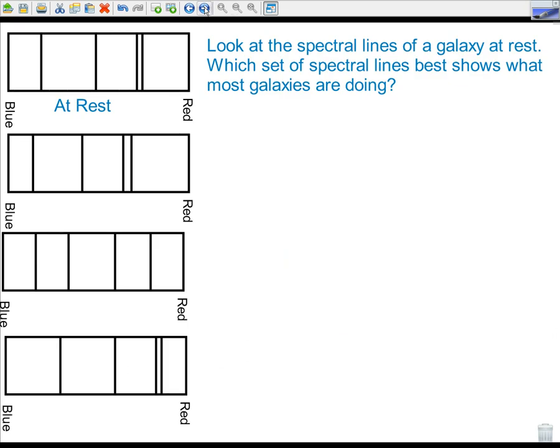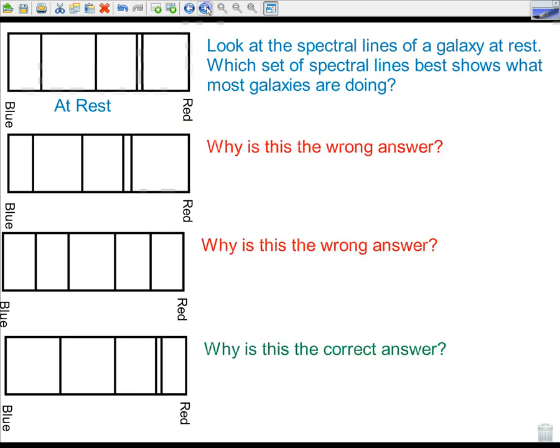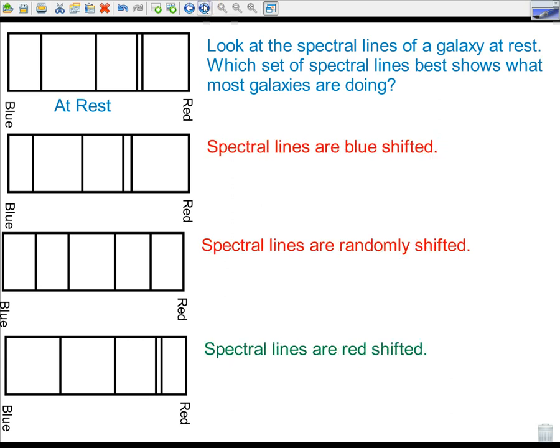So a little question that comes up: Look at the spectral lines of the galaxy at rest. Which set of spectral lines best shows what most galaxies are doing? This would be if the galaxy was sitting still, and which one of these would give us the right answer? The last one would be correct. The first one, the spectral lines are blueshifted, which would suggest that galaxy is moving towards us. The second one, the spectral lines are randomly shifted, so that doesn't happen. And here, it's the same pattern, same spacing as at rest, but shifted towards the red end of the spectrum, which is what most galaxies are doing because our universe is expanding.